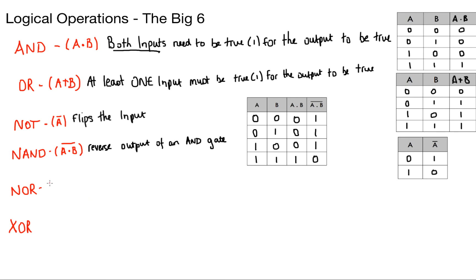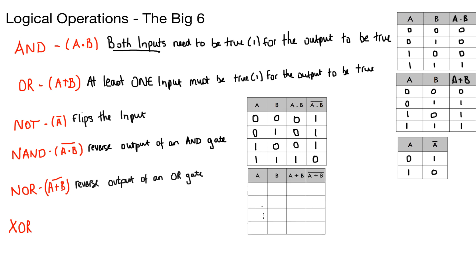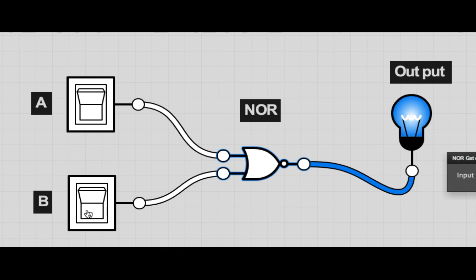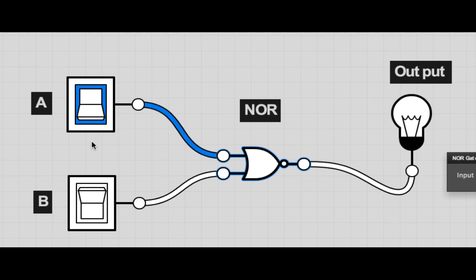The same process applies for NOR. I write my normal OR by ORing A and B using the plus symbol, then I draw a NOT bar over the top. I can take my truth table from A or B shown above, and then just flip the outputs. It should just be the flipped version of the OR truth table. So I do my inputs as normal — 0, 0, 0, 1, 1, 0, 1, 1 — then I do my normal ORing: anything with a 1 gets a 1. And then I flip all the last column to give me 1, 0, 0, 0. The only time my light bulb will be on is if both A and B are switched off. If I turn switch B on, the light will go off. And if I turn switch A on as well, it will also be off.